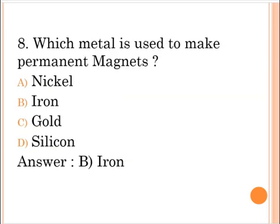Next question: Which metal is used to make permanent magnets? A. Nickel, B. Iron, C. Gold, D. Silicone. The correct answer is option B, Iron.